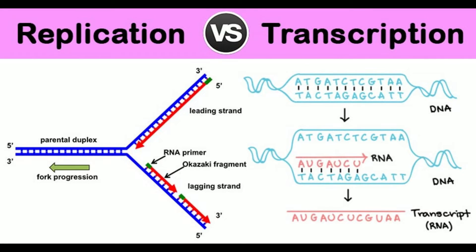5. Motive: DNA replication occurs in preparation for cell division. Transcription occurs in preparation for protein translation.